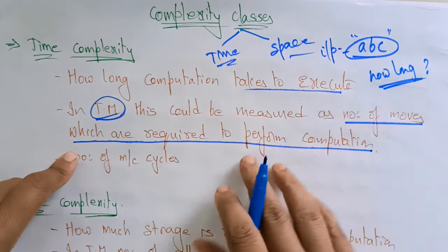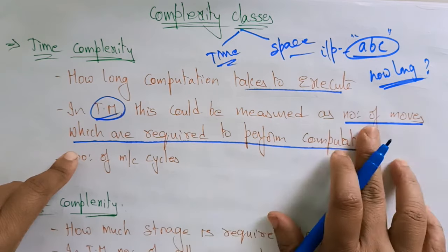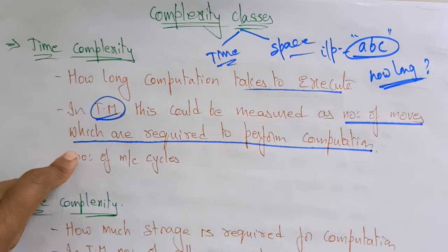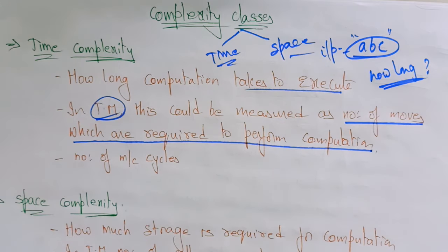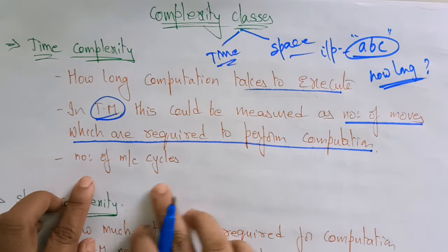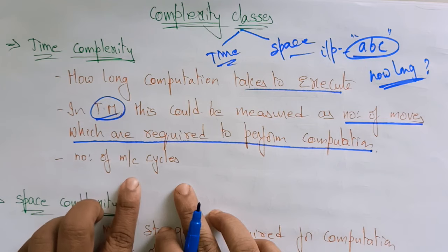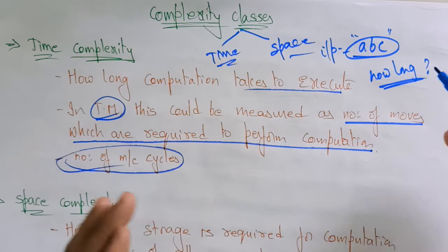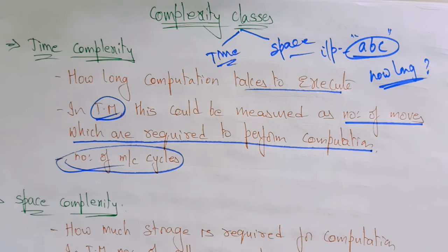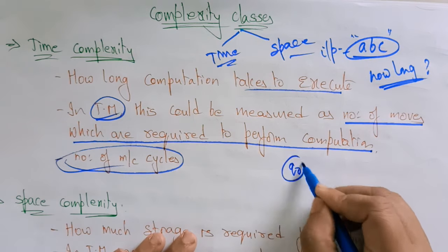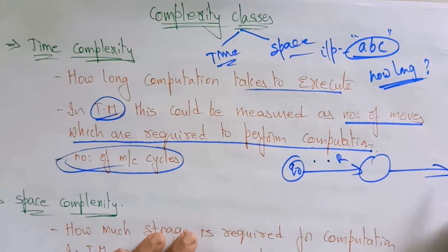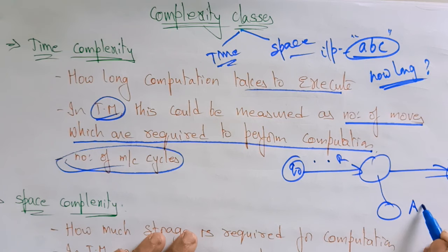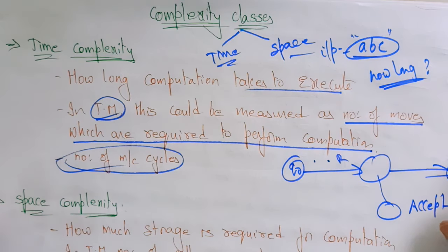Suppose this is an input I want to compute in the Turing machine. How much can this be measured as number of moves which are required to perform a computation? That is the number of machine cycles — number of moves required to perform a computation. Starting from state Q0, taking the input and the next state and moving right or left, how many number of moves it takes to accept the string — that represents the time complexity.